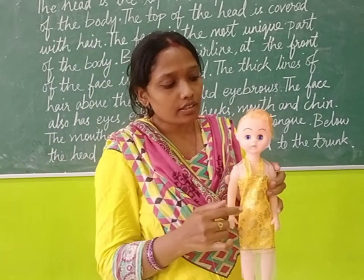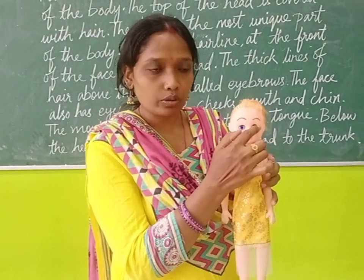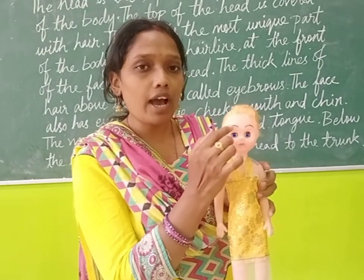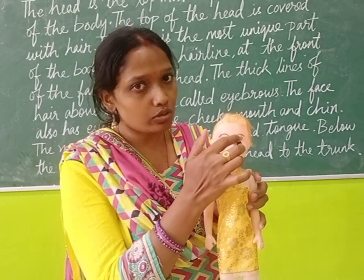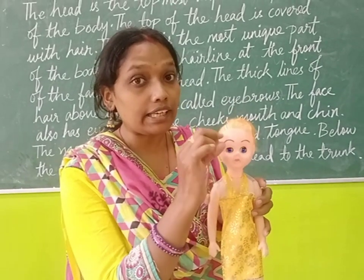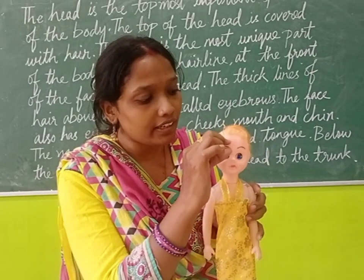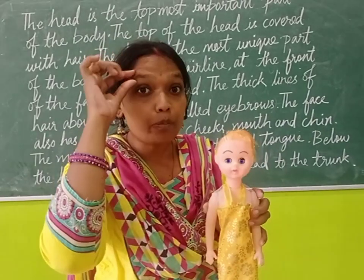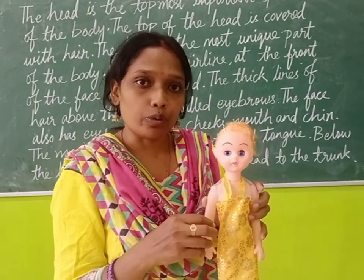Then next, we have two eyes. And above the eyes — above means upper — above the eyes, we have thick lines. These thick lines are called eyebrows. What do we call? Eyebrows. Clear children?